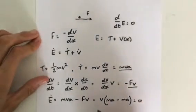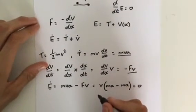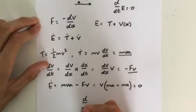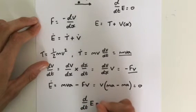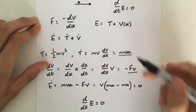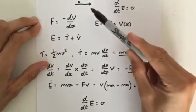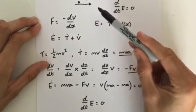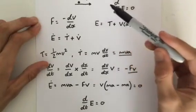Force is equal to mA, so mA minus mA is zero. Zero times velocity is zero. Therefore, we have proved that the rate of change of total energy is zero for a particle moving along the x-axis under the influence of a force.